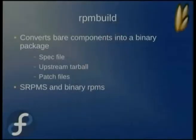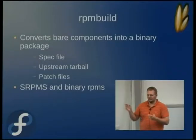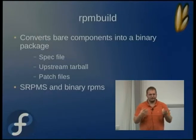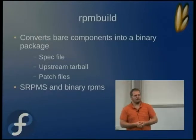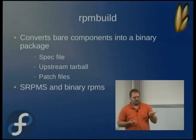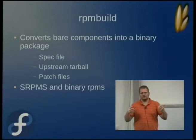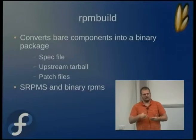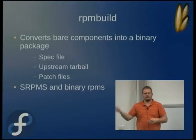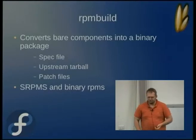RPM build is used to create binary RPMs. Everybody first learned how to build an RPM by doing 'rpmbuild -ba' or '--rebuild'. RPM build converts the bare components — the spec file, which is your recipe telling you what you need installed to build against, how to build it, what commands to run, and what you should get out at the end. In the source RPM we have the spec file, the upstream tarball, and patches, and we end up with a source RPM and a binary RPM.